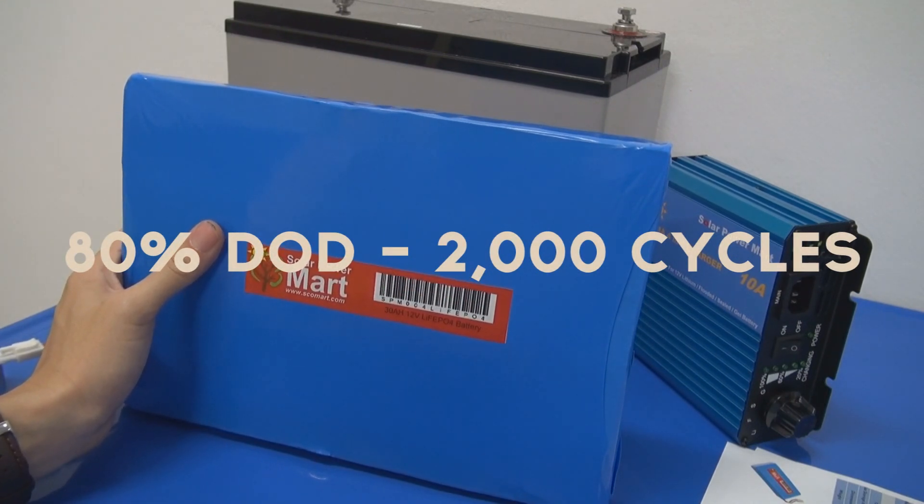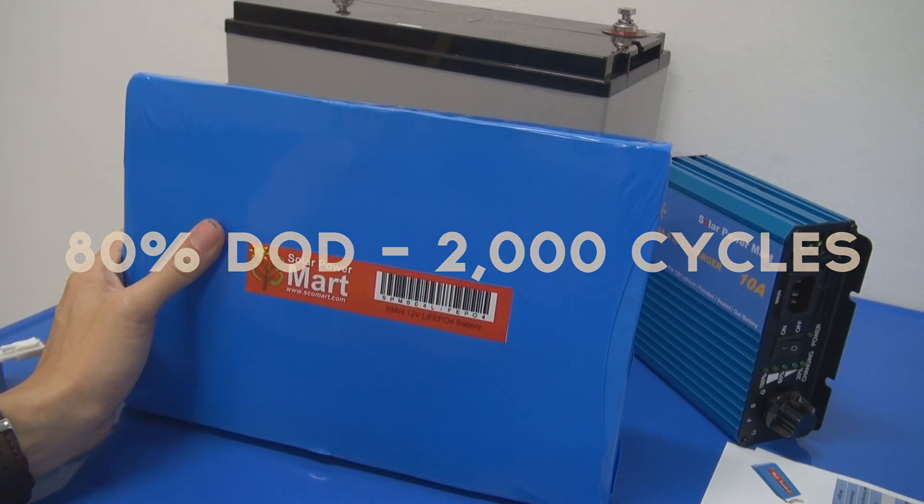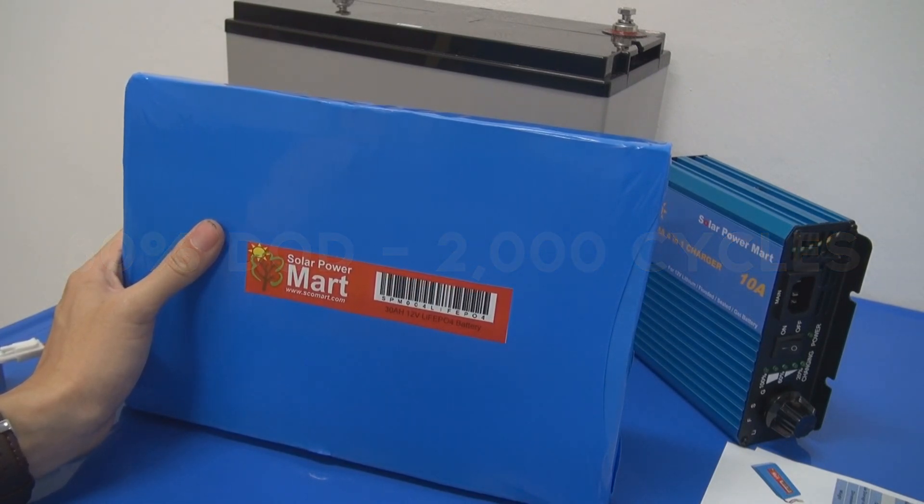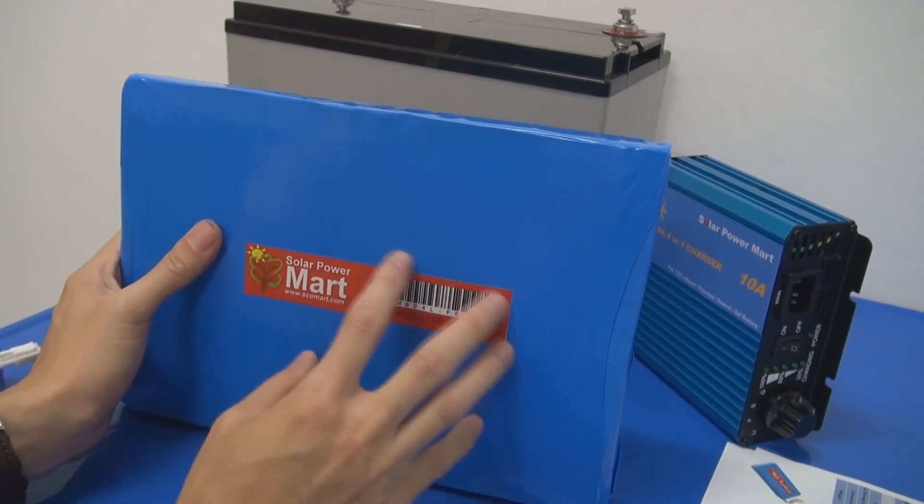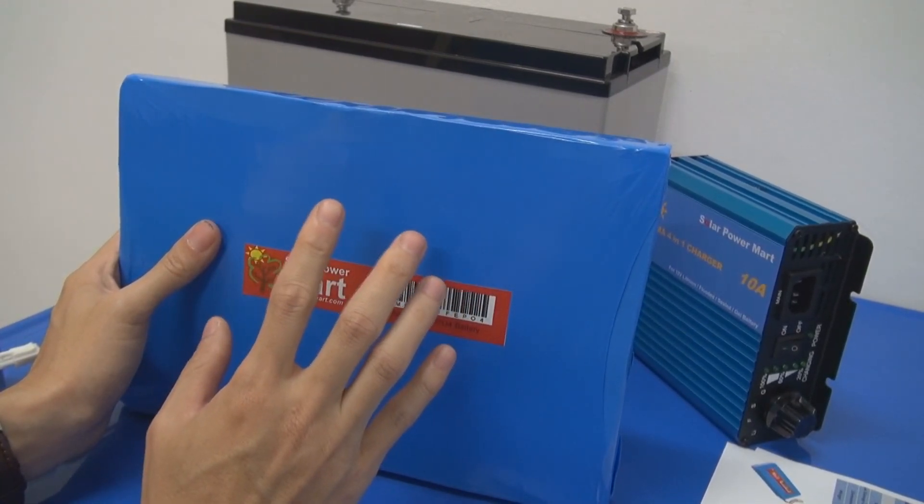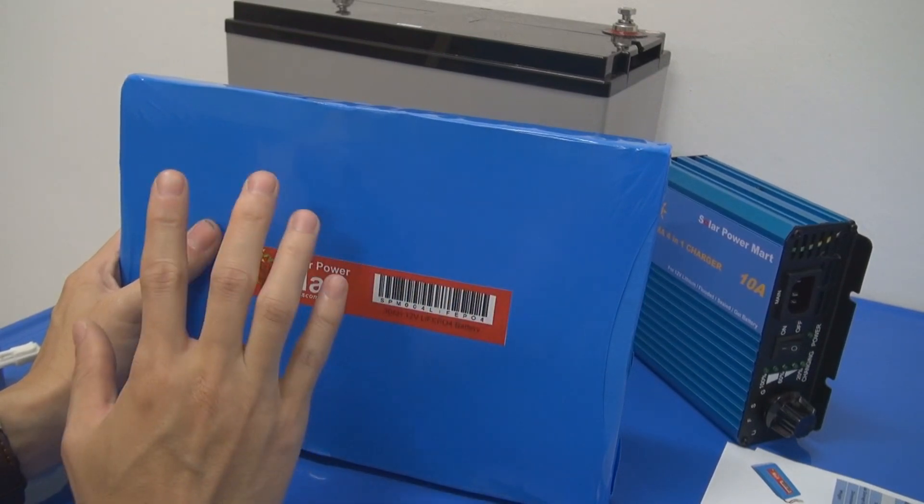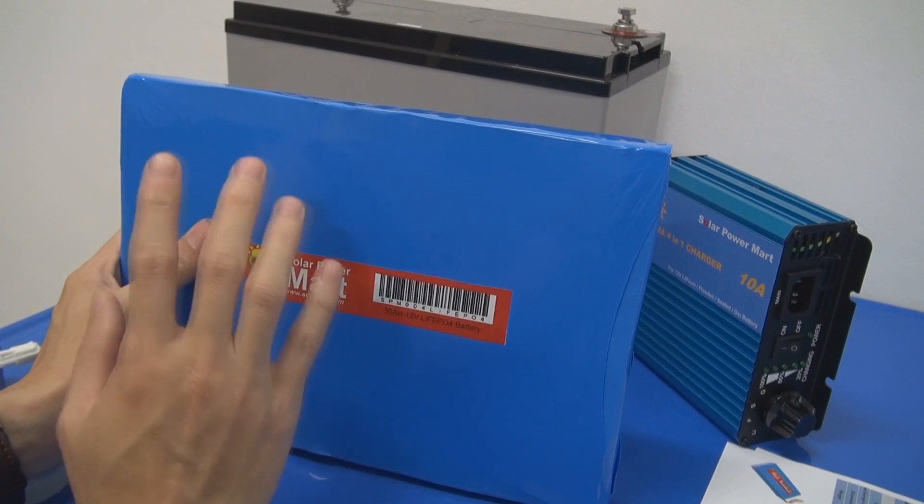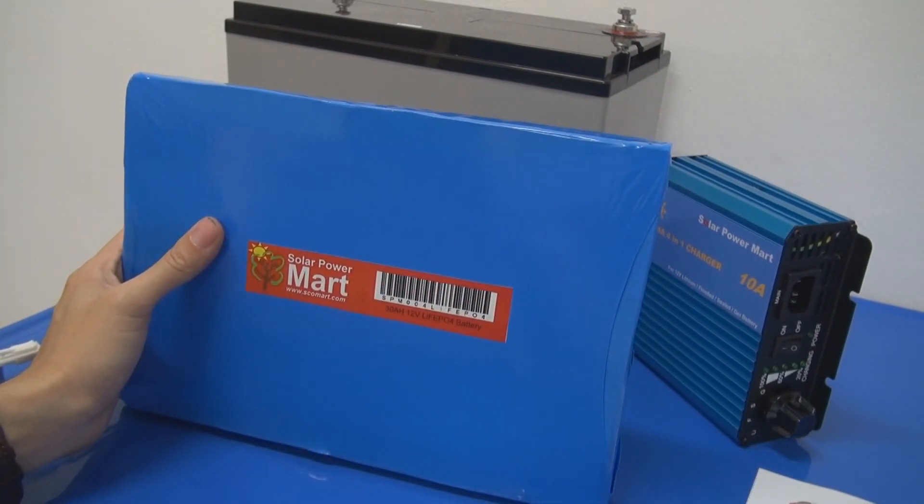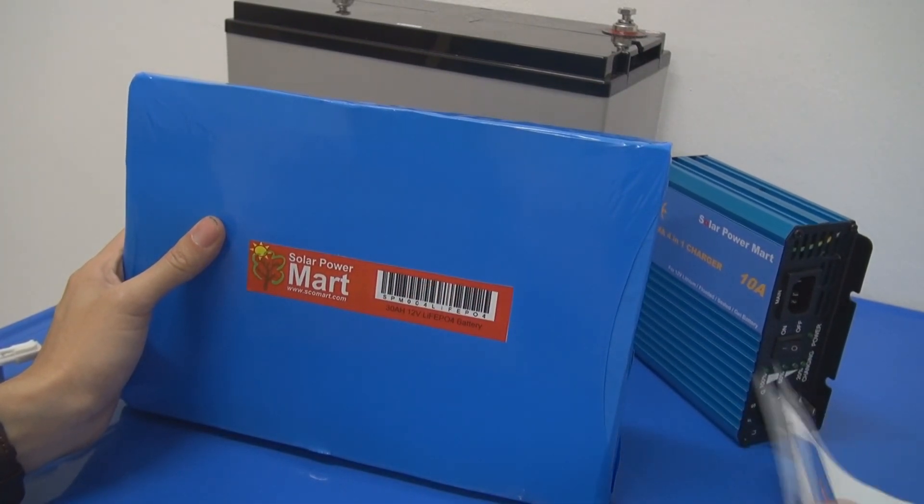But you do not need to do what we do in SLA or flood battery, whereby if the temperature is too high, 25C to 35C, you need to cut the cycle life in half. But for lithium battery, you don't need to do that. Why? Because lithium battery itself, especially LiFePO4—I'm talking about LiFePO4, not lithium ion or lithium polymer, those are different kinds of batteries.